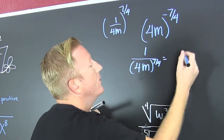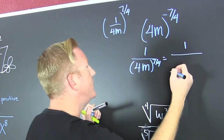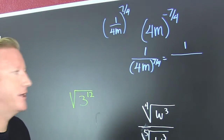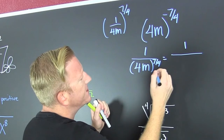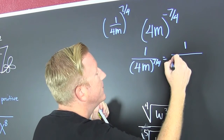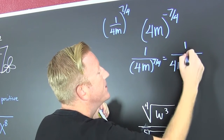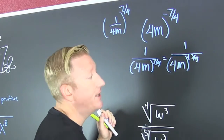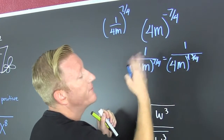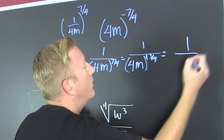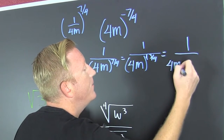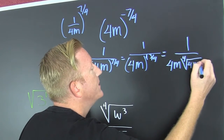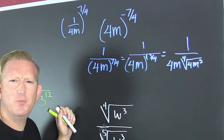Seven fourths is a 1 and 3 fourths, so that's 4m to the 1 and 3 fourths written as a mixed number. That means there's a whole part, so one of those gets to come out — giving us 1 over 4m, and then the fourth root of 4m to the third.